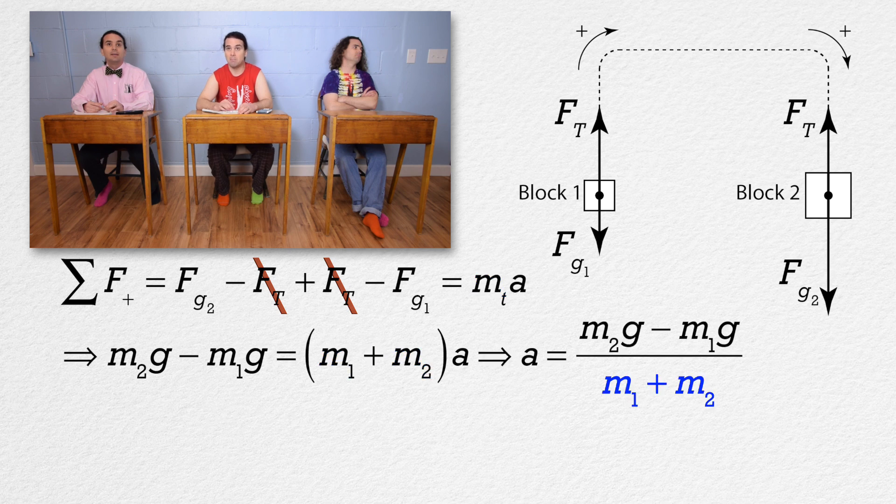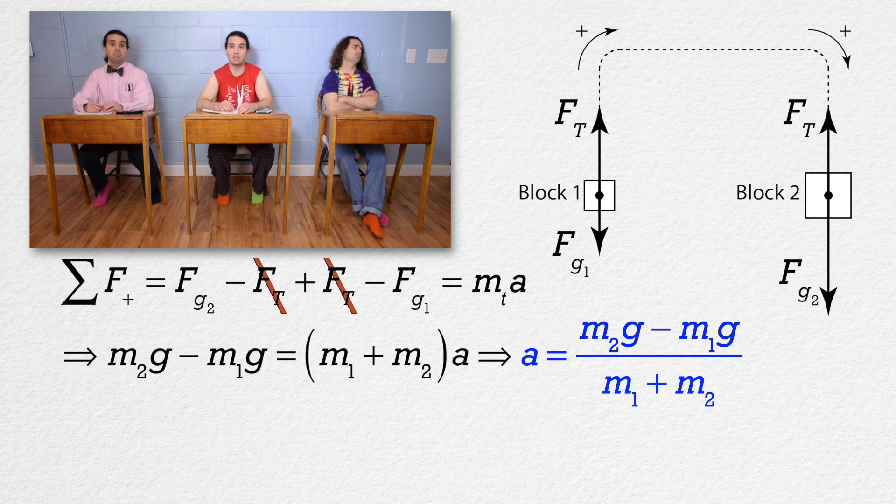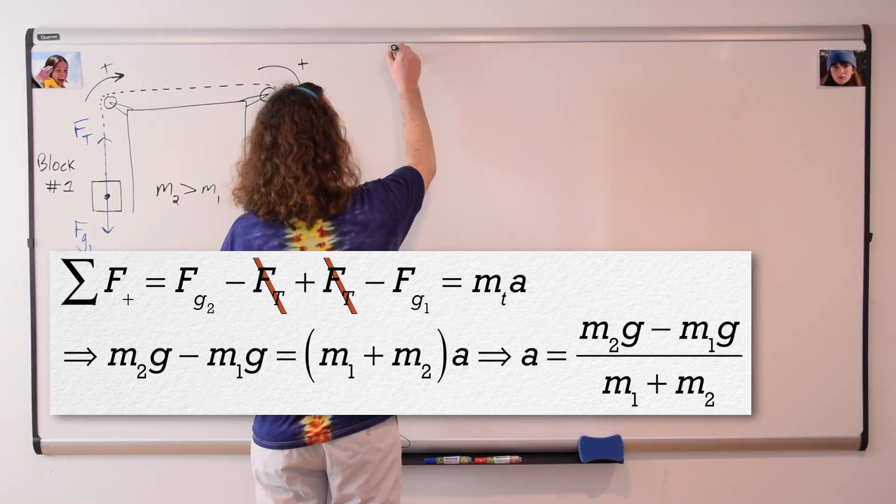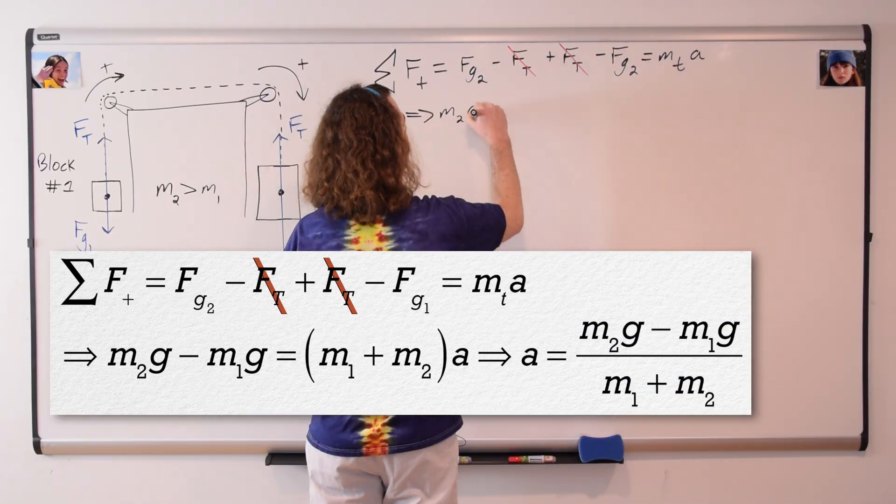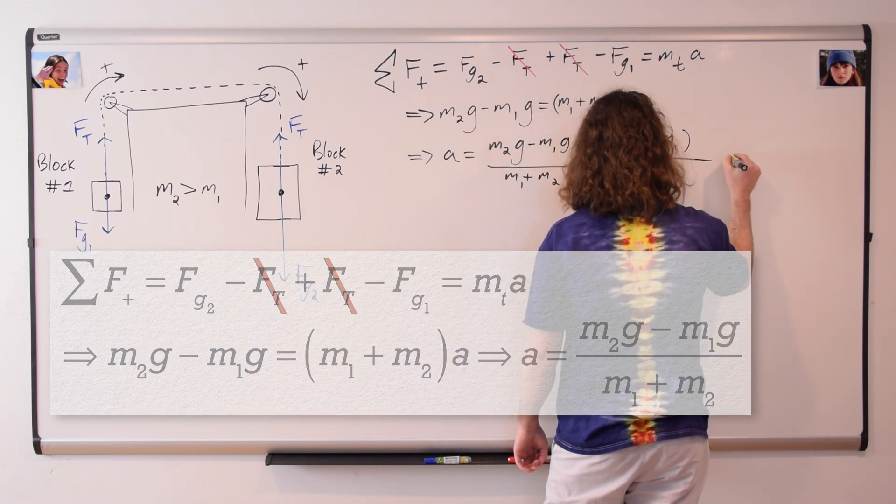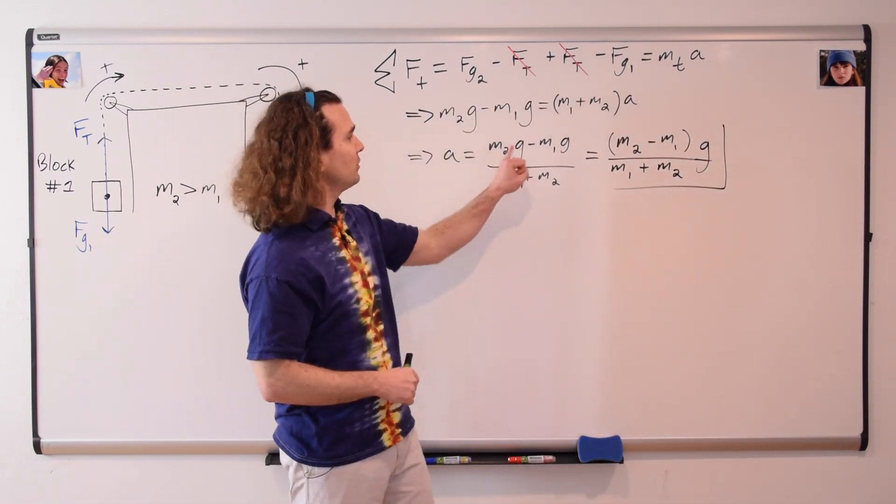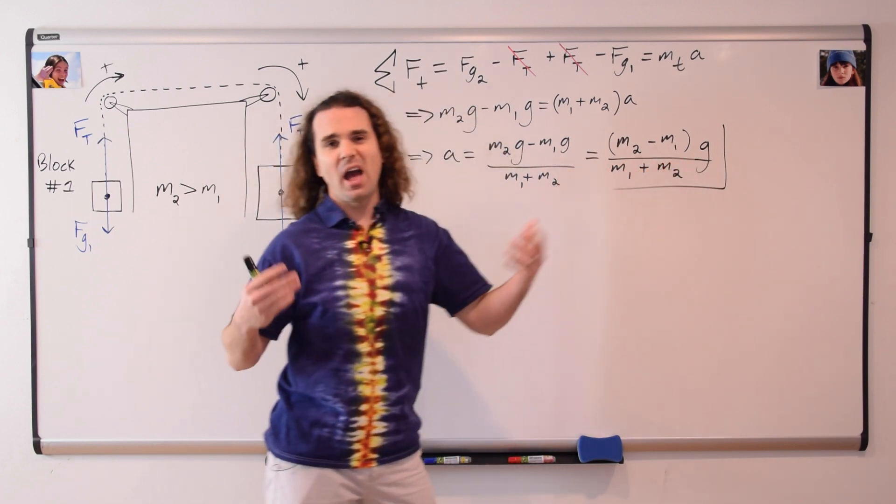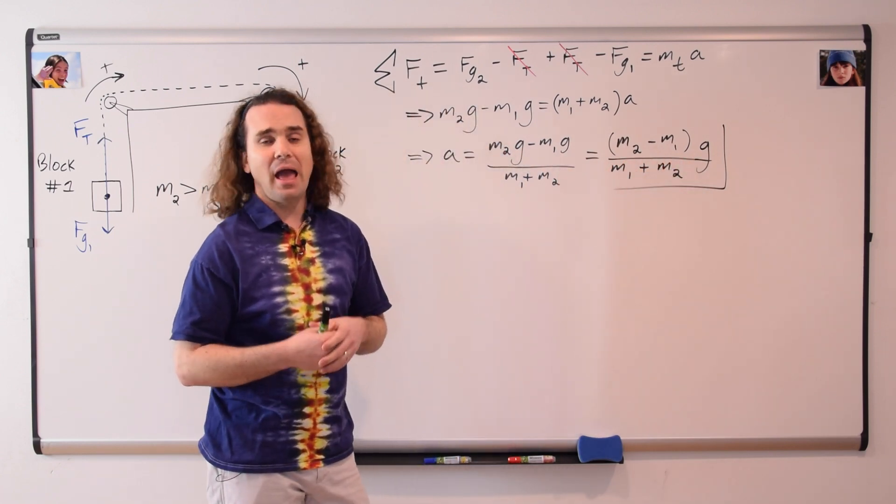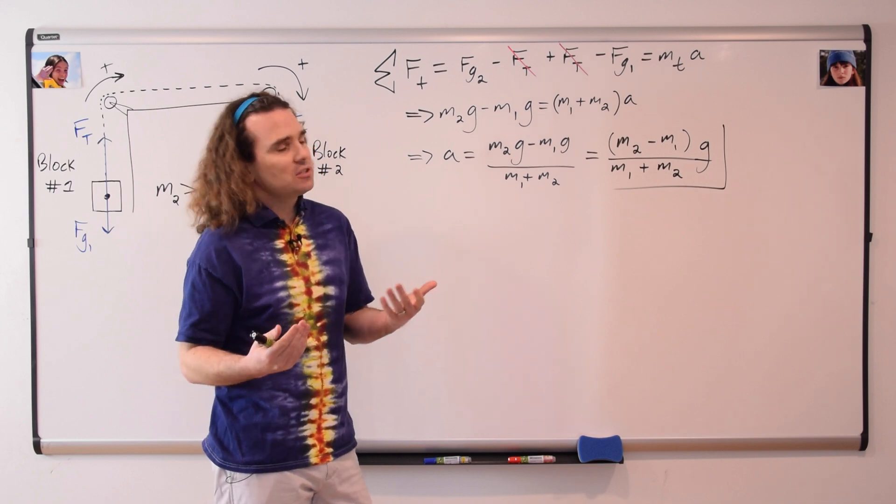Divide both sides by mass one plus mass two and we have our answer. Acceleration equals mass two times acceleration due to gravity minus mass one times acceleration due to gravity all divided by the quantity mass one plus mass two. Very nice, you'll notice I actually went one step further, I pulled the acceleration due to gravity out, which isn't absolutely necessary, but it looks a little bit cleaner.